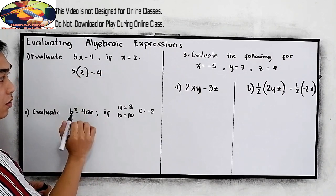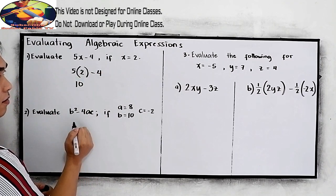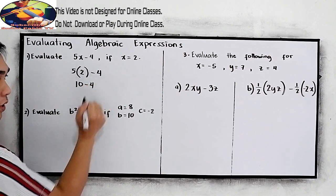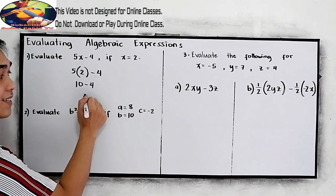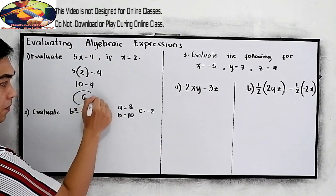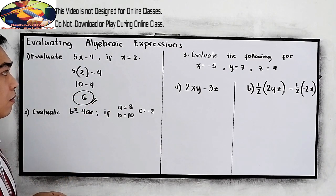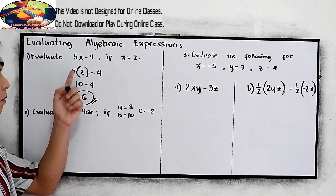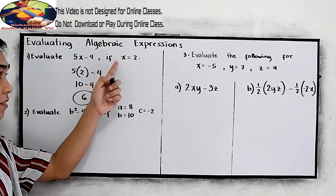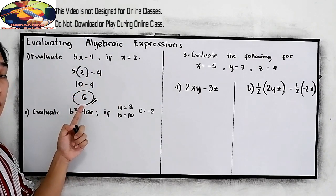5 times 2, this is 10, minus 4. And 10 minus 4, that is 6. Therefore, the value of this expression if x is equal to 2 is 6.